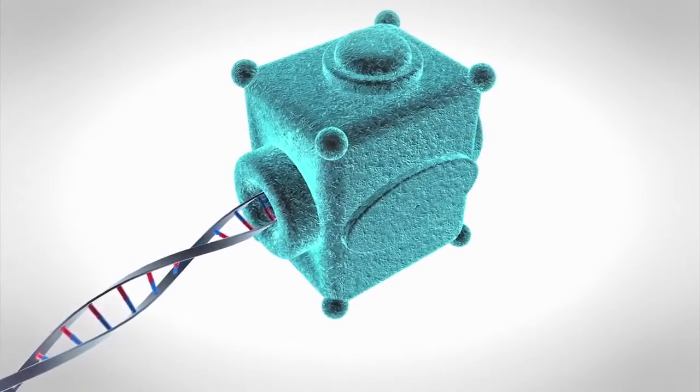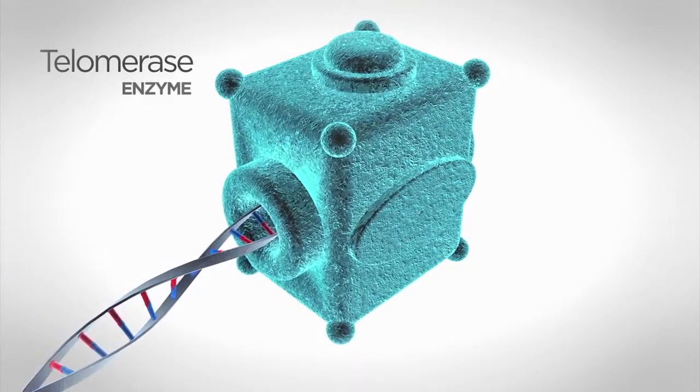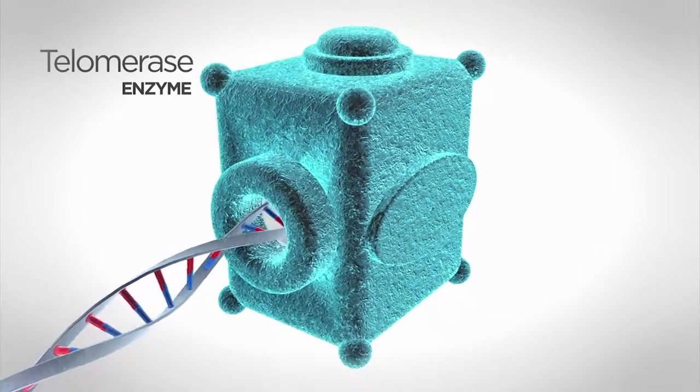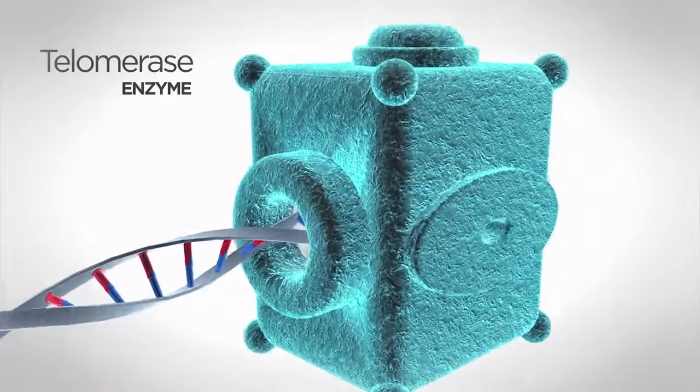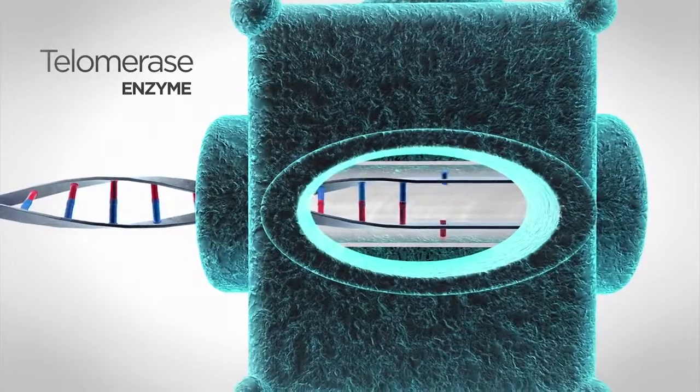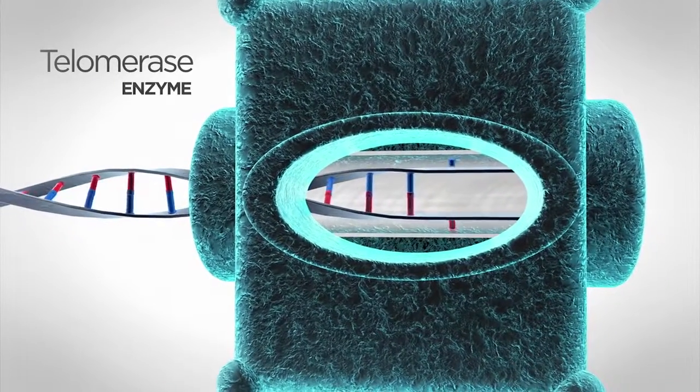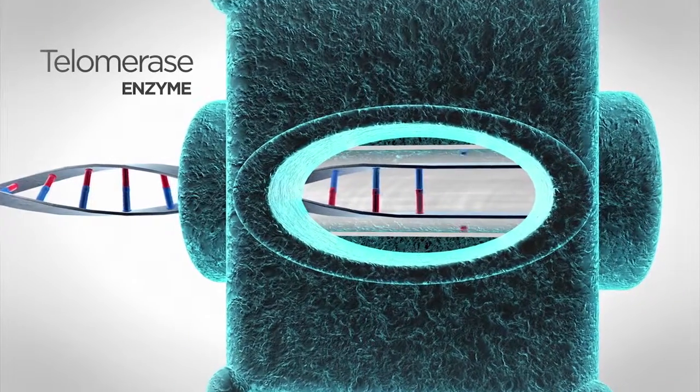To counter these effects, the enzyme telomerase, which is active in our stem cells and other cells that renew over time, can reverse telomere shortening by adding back lost DNA, thereby enabling the rejuvenation of cells, tissues, and organs throughout our life.